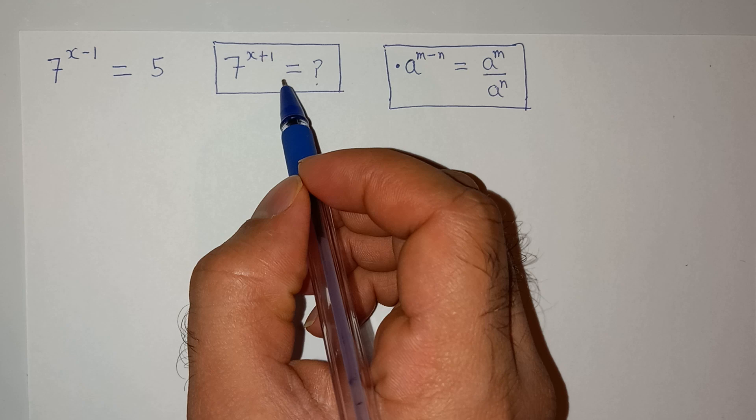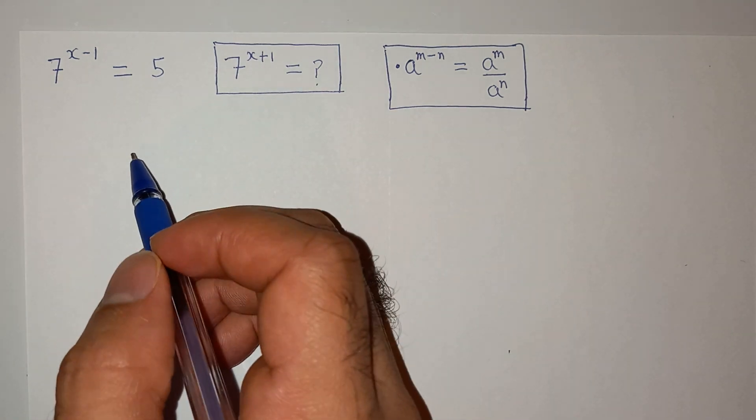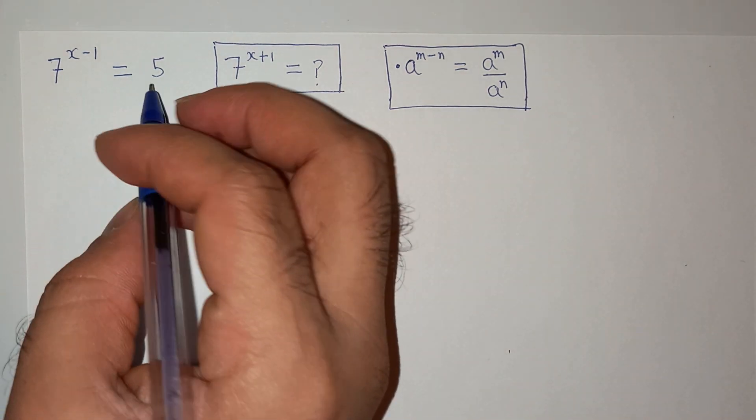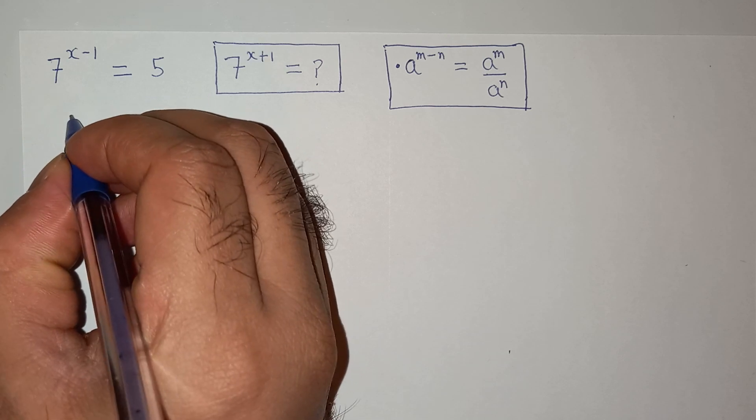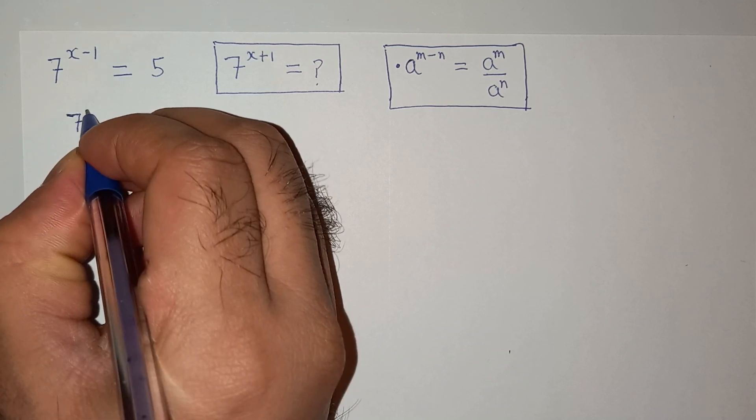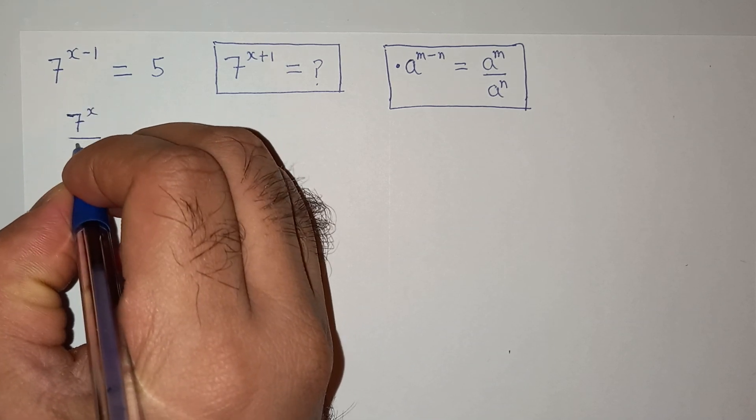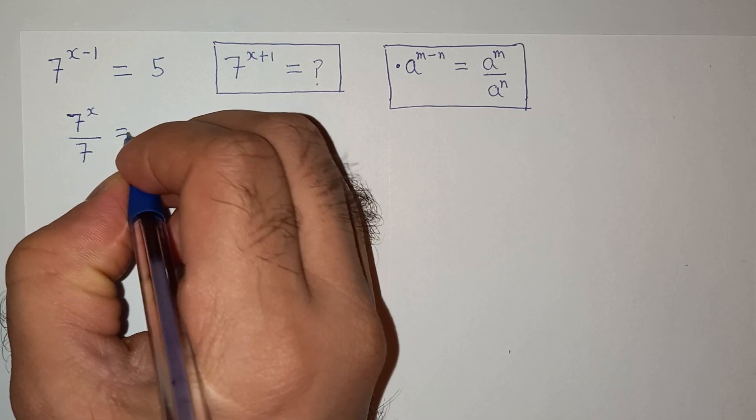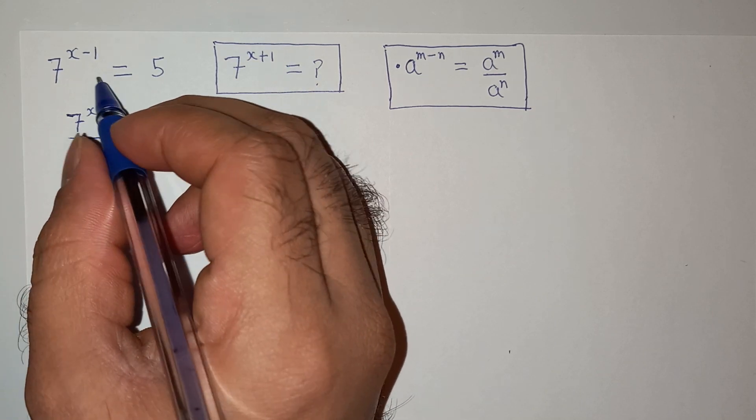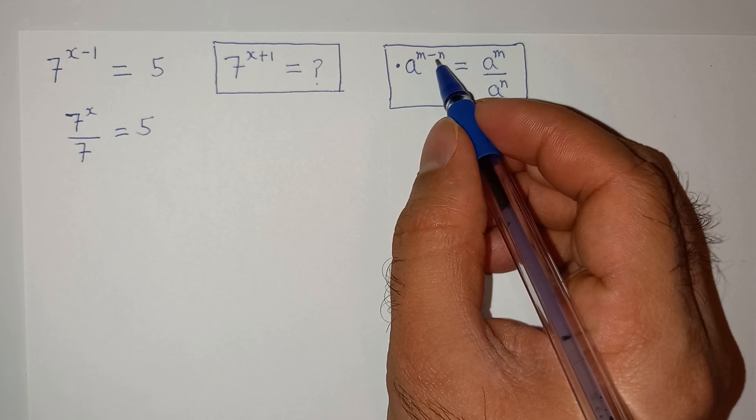All right, so let's try to solve it. We can write this as 7 power x divided by 7 equals to 5. So I have used this exponential rule which is a power m minus 1 equals to a power m divided by a power n.